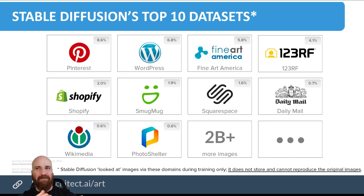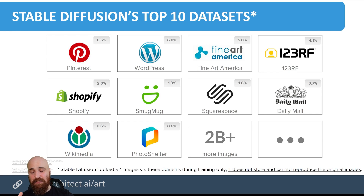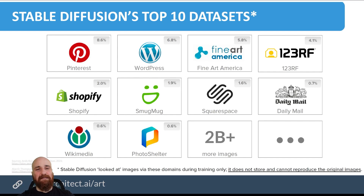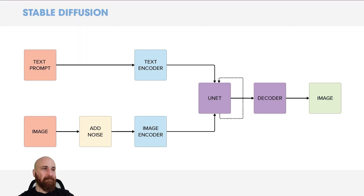Other models probably used different resources or had different percentages of image types, which means they already had a bias toward making different kinds of images. I mentioned MidJourney has always been more artistic — potentially because they used more art-related images like scans of paintings and sculptures. Other models may have used more equally distributed datasets, yielding different results depending on what you were trying to generate.